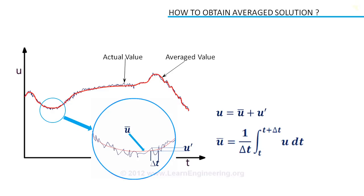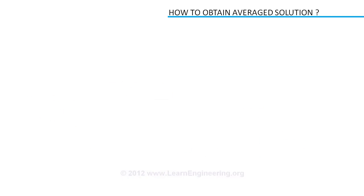To get these averaged values, instead of solving actual NS equations, we can solve something called averaged NS equations. Navier-Stokes equations generated after averaging operation are known as Reynolds Average Navier-Stokes equations.